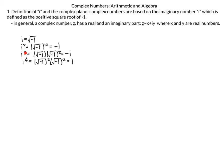When we take i squared, that's the square root of negative 1 squared — these two are inverses — so we get negative 1. i to the third is i squared times i, which is negative 1 times i, giving negative i. i to the fourth is i squared times i squared, so negative 1 times negative 1, giving 1. When we get to i to the fifth, we circle back to i; i to the sixth is negative 1; i to the seventh is negative i; and i to the eighth equals 1.